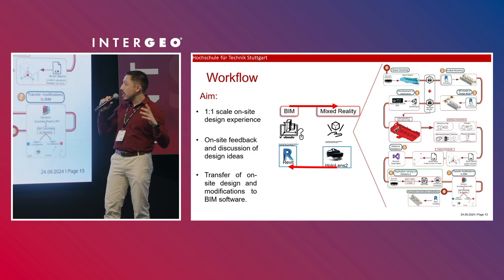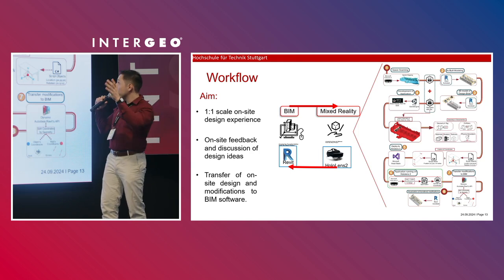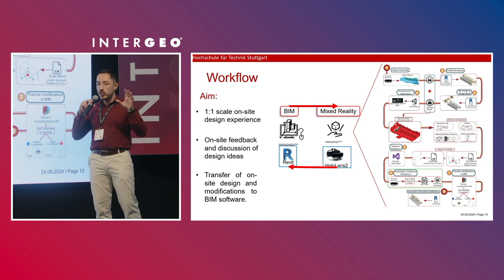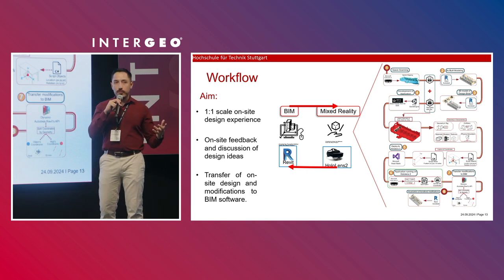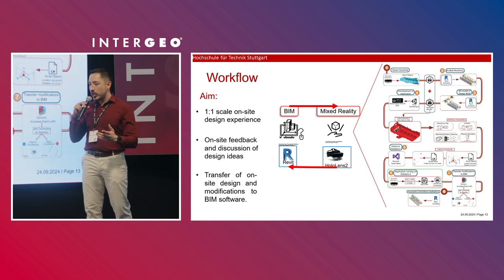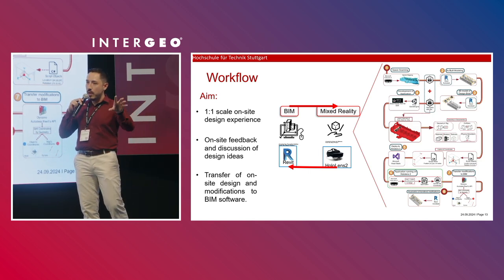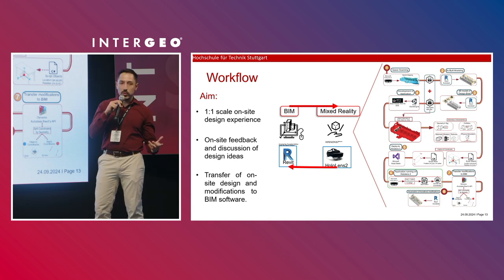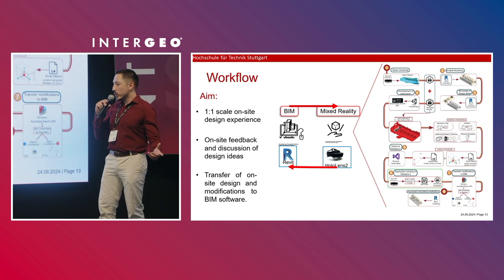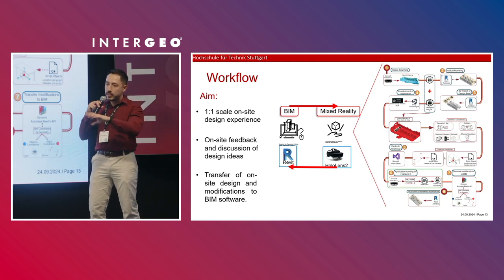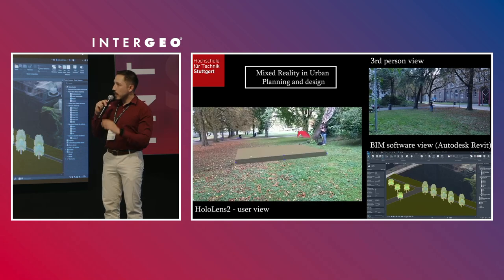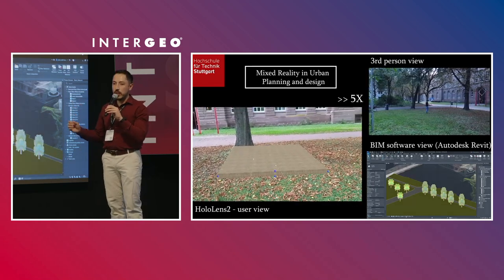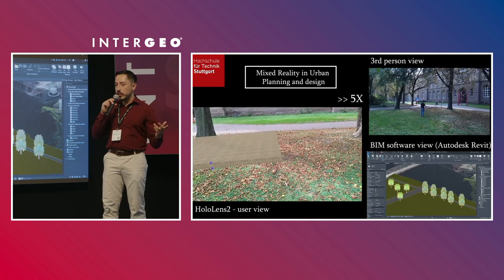The workflow used eight steps involving a pre-scanning of the environment, then a game engine to link BIM and mixed reality technologies, and authoring software such as Autodesk Revit to bring information back from mixed reality to BIM. The application runs on the Microsoft HoloLens 2 headset, and this demo shows how it can be used for urban planning and urban design cases.